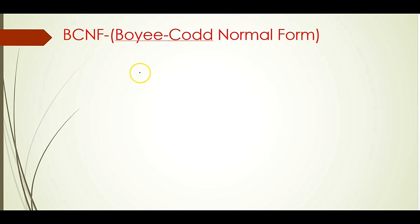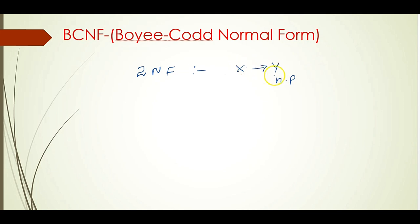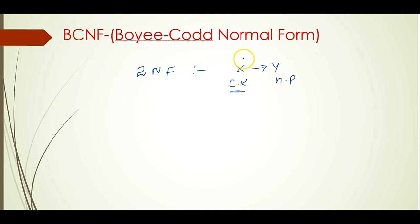Let us see first the second normal form, 2NF. In the second normal form we are talking about any dependency X derives Y. There are non-prime attributes involved. Second normal form is talking about no partial dependency — no non-prime attributes are dependent on only a subset of the candidate key, which is obviously a prime attribute.